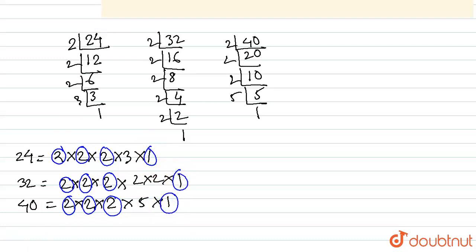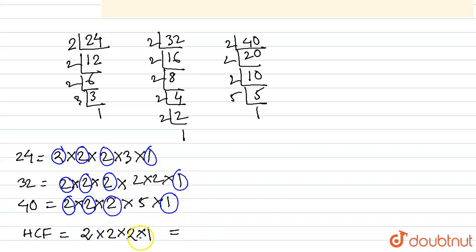So finally, the HCF — the common factors are 2 into 2 into 2 into 1. That gives us 2 times 2 is 4, 4 times 2 is 8, and 8 into 1 is 8. So the required answer is: the HCF of 24, 32 and 40 is 8. That is the required solution to this question.